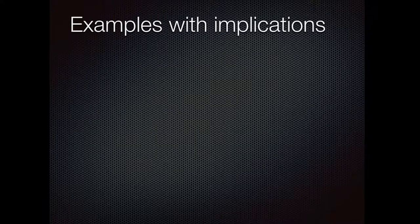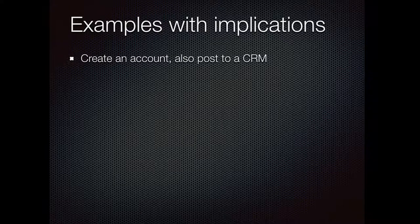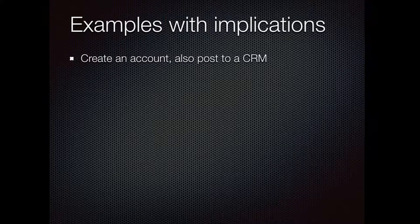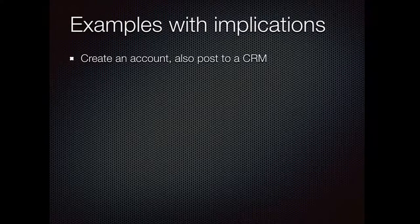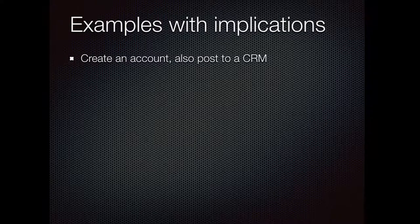Some examples of data protection situations: someone signs up for your service and you call an API that pushes a record into your CRM so you can track their purchase. Later they cancel their account on your system, but you leave the data in the CRM. You end up with orphan data you can't account for. You need to make sure there are processes going both ways — not just for pushing data in, but also for clearing it out.